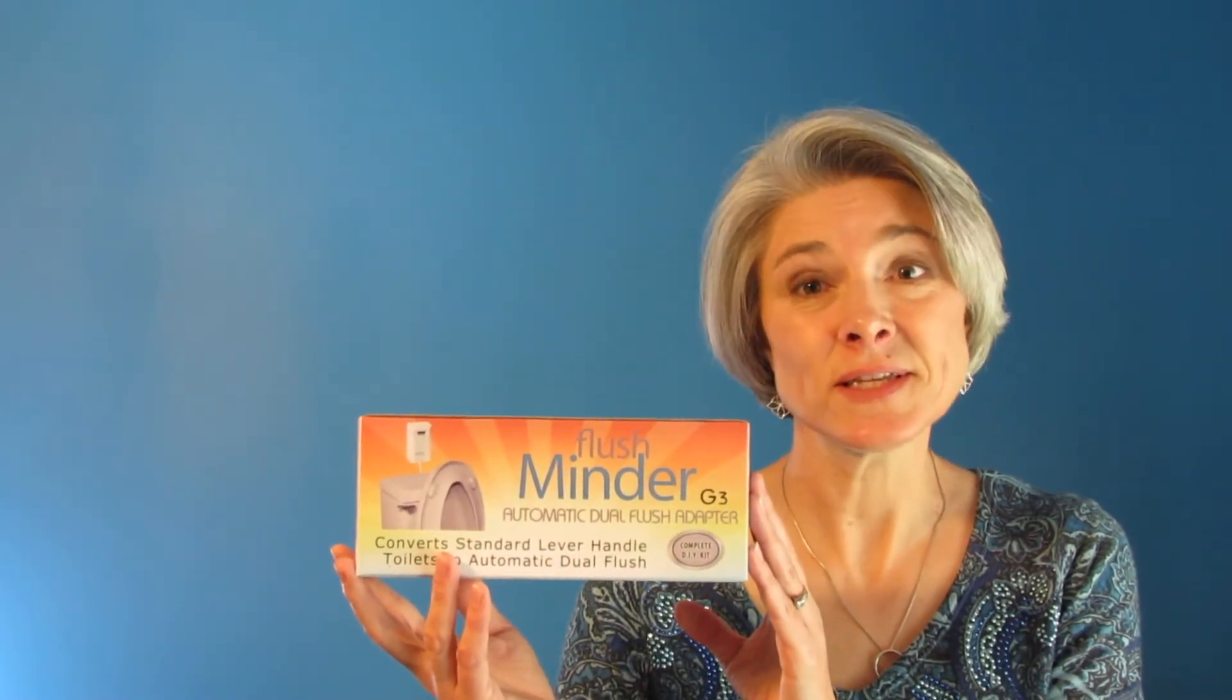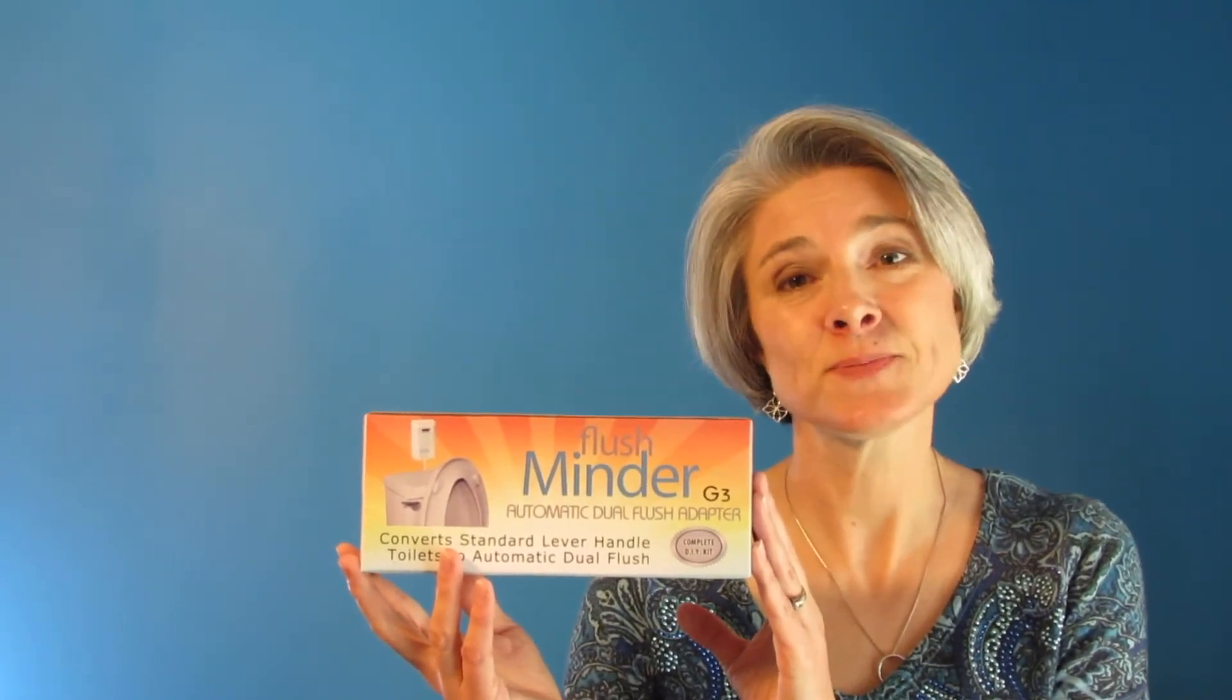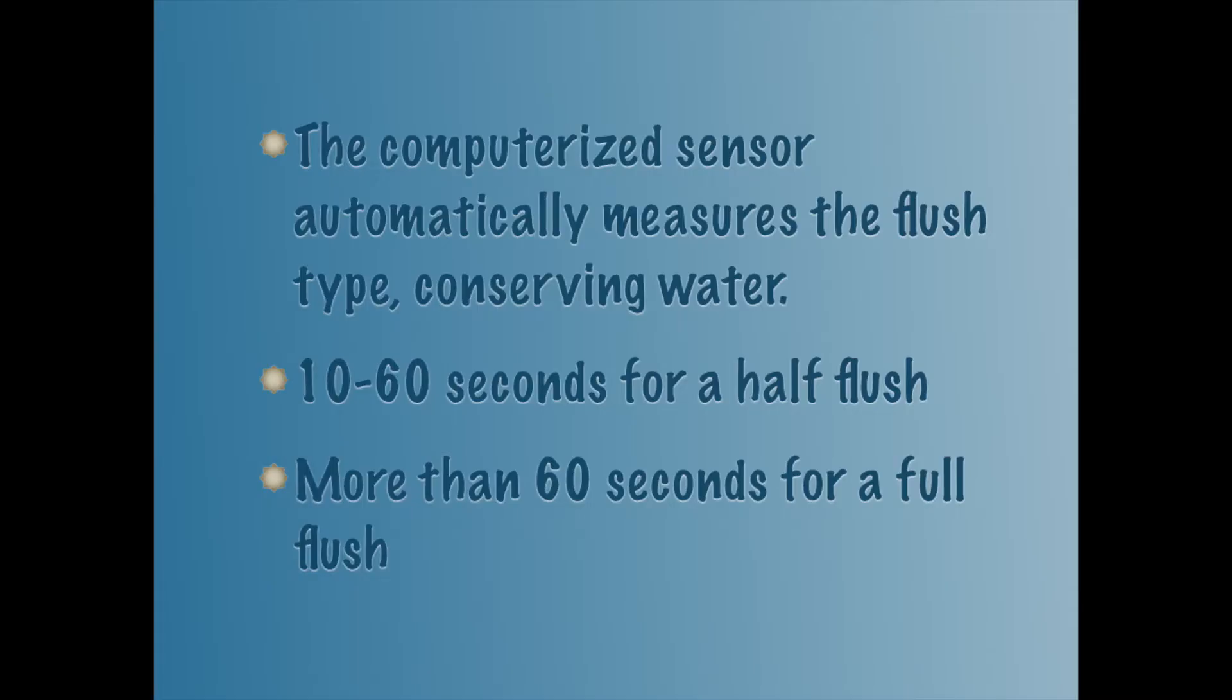An added bonus is that this system can be set up to use with potty trained cats. The computerized sensor automatically measures whether a full or half flush is needed, helping you to conserve valuable resources.